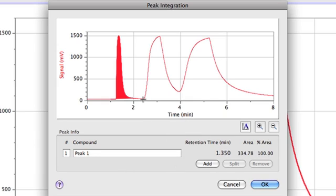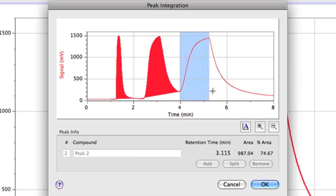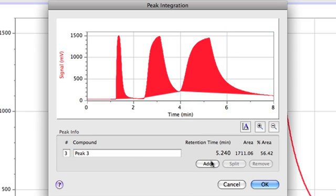For the second peak, I do the same thing. I place my cursor on one side of the peak and drag to capture the region around the second peak and click add again. This is peak two. And notice that I've got a retention time and a peak area calculated. And then I will do the same thing for the third peak. And click add one last time.